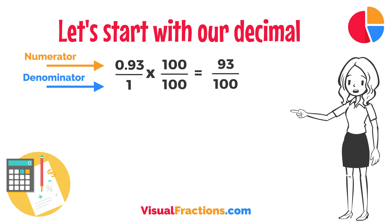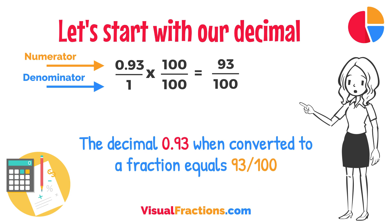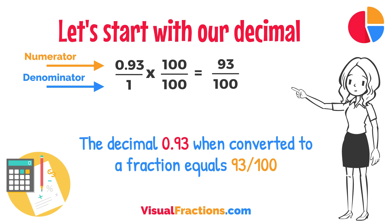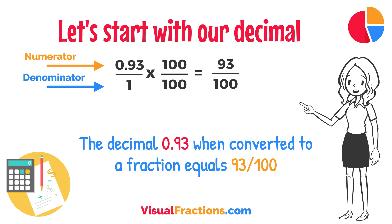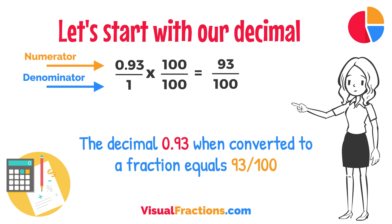And there you have it. The decimal 0.93, when converted to a fraction, equals 93 one-hundredths. This fraction is in its simplest form and cannot be further simplified.